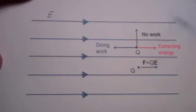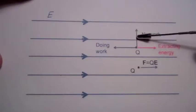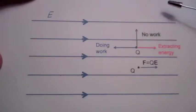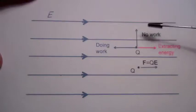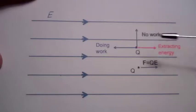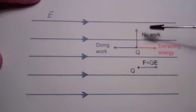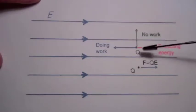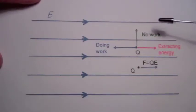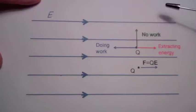Now, if I take this charge Q and move it perpendicular to the electric field, it takes no force to move that charge because the force due to the electric field is at a right angle to the direction we are moving. So we are doing no work, so the potential energy is not changing for that charge Q. This would be like being on a hill and moving laterally — that is not changing your elevation, so there is no change in the gravitational potential energy.